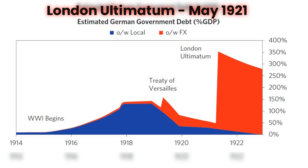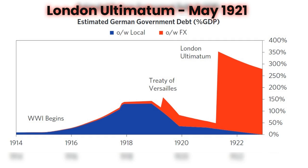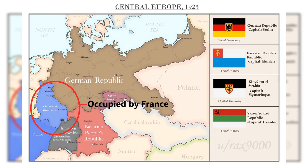The final trigger to the hyperinflation came with the London Ultimatum in May 1921, designed perhaps to cripple Germany. This was a new reparation treaty imposed by the Allies, demanding 132 billion marks, or about 330% of Germany's GDP at the time. As Germany fell behind on its payments, France, with deep resentments toward Germany, took the opportunity to occupy the Ruhr Valley, a major industrial region in Germany.